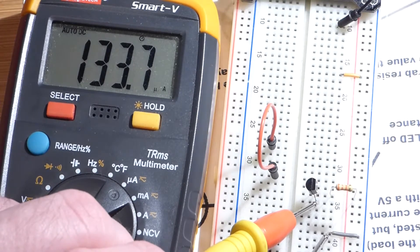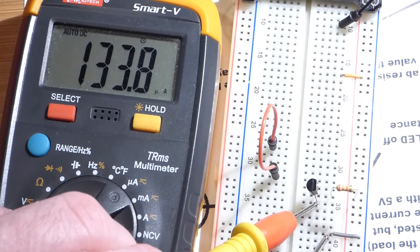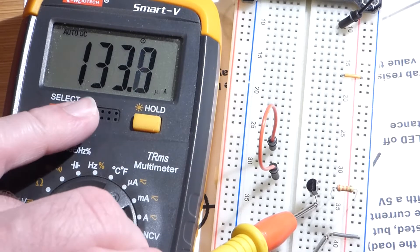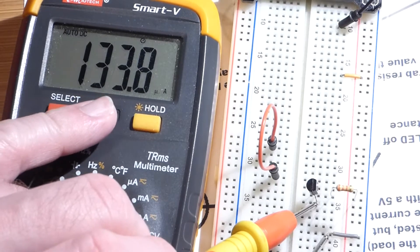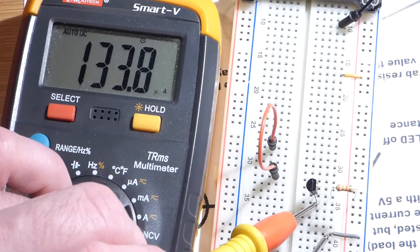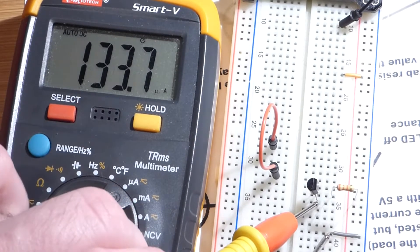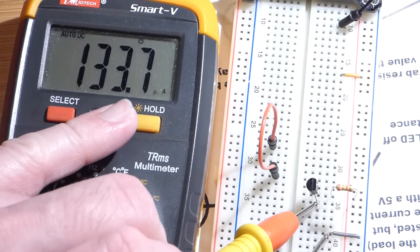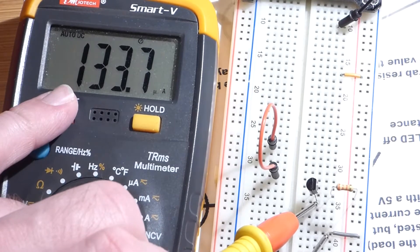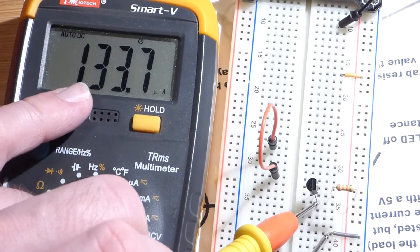We have about 134 micro-amps. While we're looking at this reading, pay attention that it's pretty stable. It's not moving around much. You'll understand why I'm bringing this up in a little bit. That's a little more than a tenth of a milliamp.